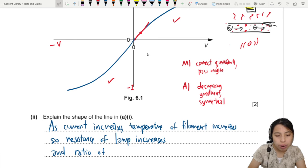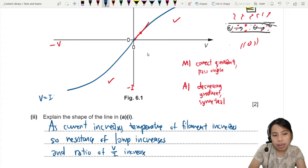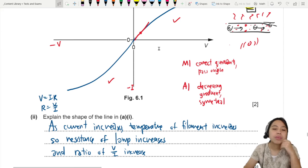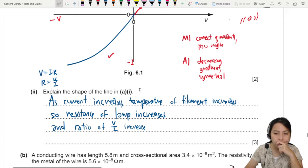And the ratio of V over I will increase. This is where the graph curves come from. Because V equals IR, that's Ohm's law, right? So resistance is V over I. Ratio. Yeah, I think that's all we can mention here.